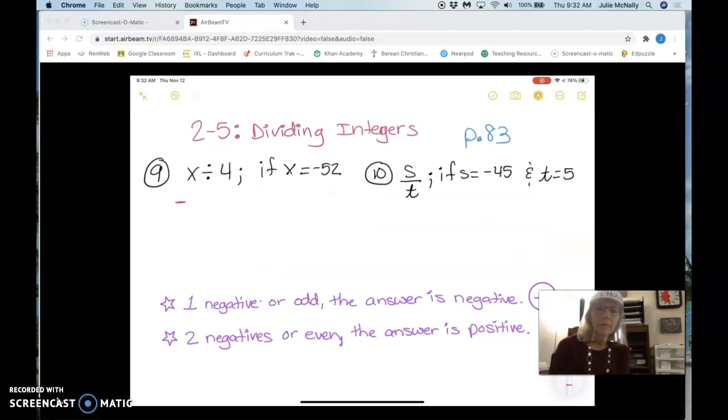For these last two examples, they give us an expression and then they tell us what one of the variables is worth so that we can evaluate the expression. So all I'm going to do for number 9 is plug in this number they gave me for x right there. So I'm going to say negative 52 divided by 4, because they told me x equals negative 52, right here.